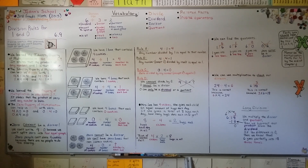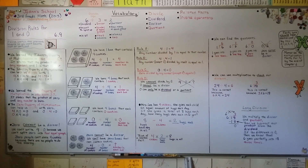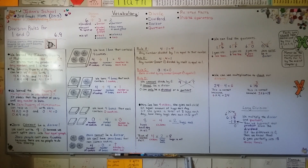So remember, when we're dividing with 1 and 0, we can use the identity property of multiplication to help us divide with 1. We can use the zero property of multiplication to help us divide with 0. And remember, 0 cannot be a divisor — it can be a dividend or a quotient, but it can't be a divisor. I hope you have a wonderful day and we're finished with chapter 6. I hope you're working on your multiplication facts for 4, and we're going to be moving on to chapter 7 now. I'll see you there. Bye!